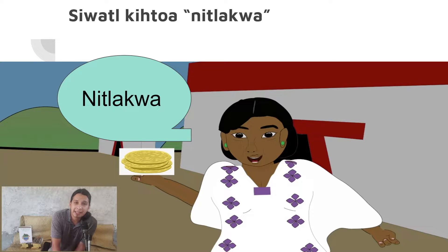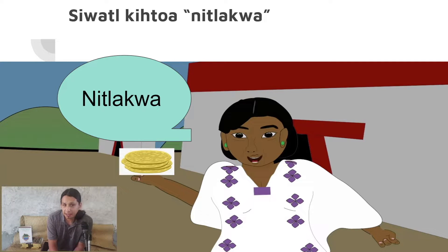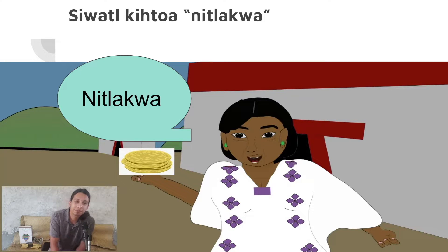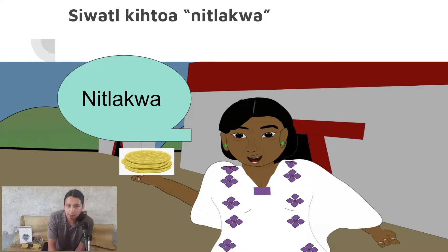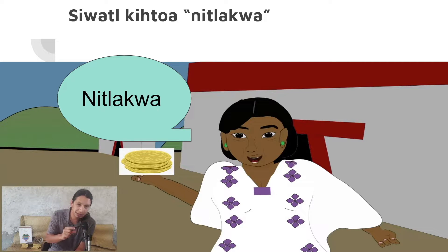In this topic we have a new text. The woman says 'ni tlakwa,' which means 'I eat' or 'I am eating.' In Nahuatl, the same translation often covers both 'I eat' and 'I am eating.' Kihtoa means 'she says,' so ni tlakwa means 'I eat.' We saw tlakwa before in the first lesson meaning 'to eat' — now we're adding ni in front of it, meaning 'I am doing this action.'